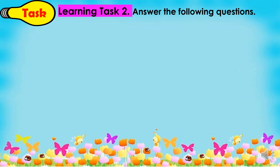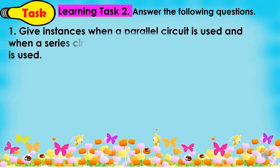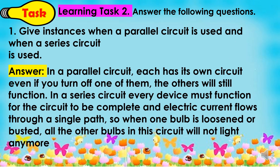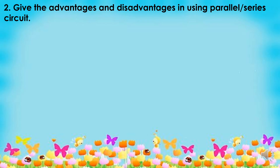For learning task 2, answer the following questions. Number 1: Give instances when a parallel circuit is used and when a series circuit is used. Here is a sample answer: In a parallel circuit, each device has its own circuit; even if you turn off one of them, the others will still function. While in a series circuit, every device must function for the circuit to be complete, and electric current flows through a single path — so when one bulb is loosened or busted, all the other bulbs will not light anymore.